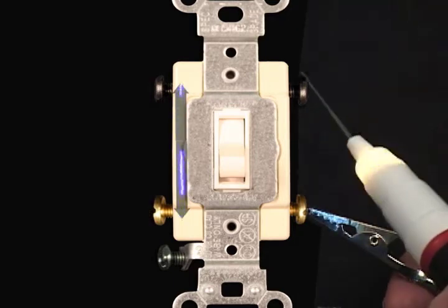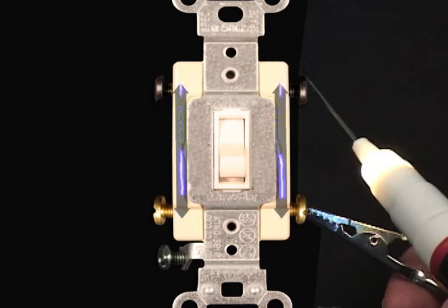At the same time, on the other side of the switch, we see that current can also pass between the upper right black terminal and the lower right brass terminal.